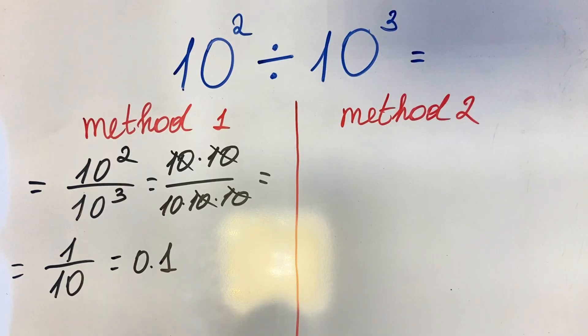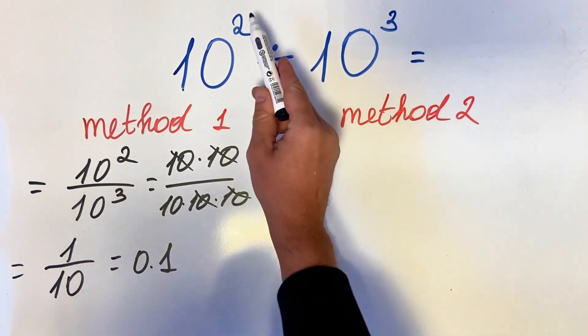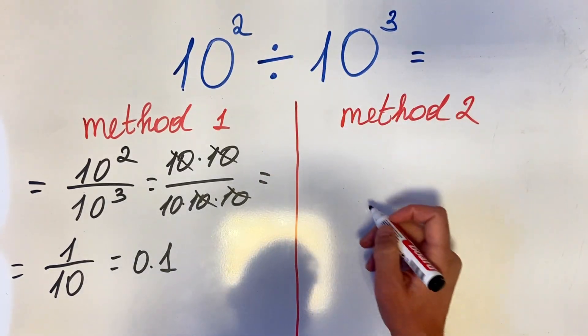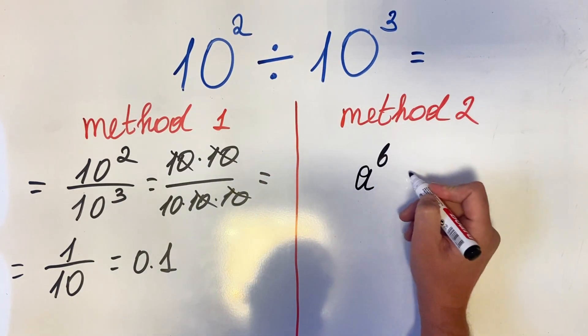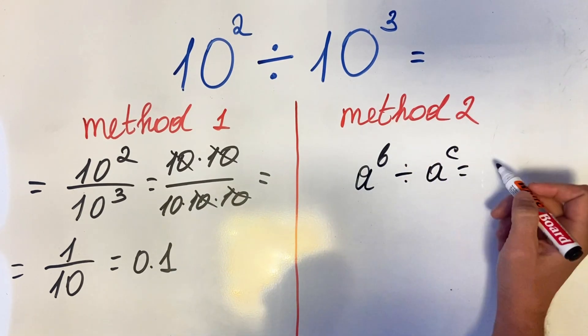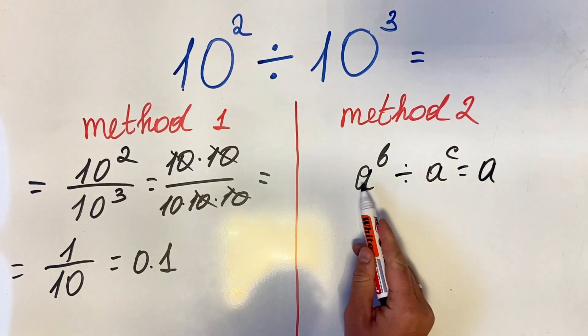The second method is where we work with exponents. We know the formula: a^b divided by a^c gives us the subtraction of the exponents if